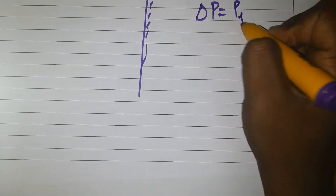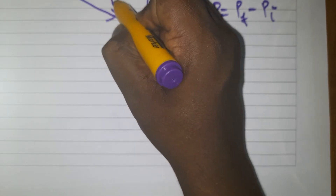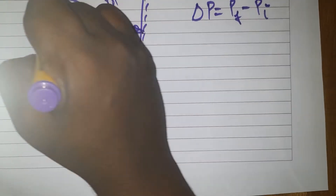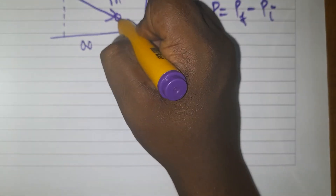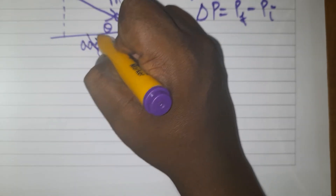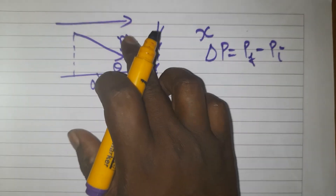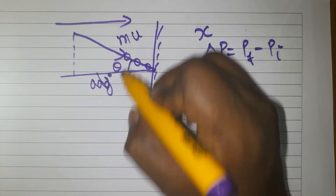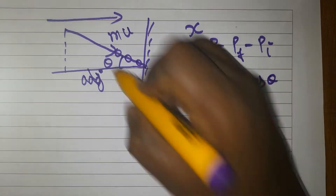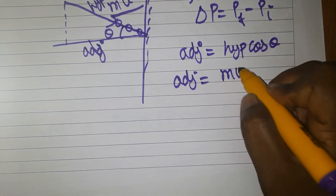First, we take the initial momentum. Change in momentum = momentum final minus momentum initial. The ball is coming in at 30 degrees, and I am taking only the x-axis component. The adjacent side of the triangle represents the x-direction. The hypotenuse is M×U, so the adjacent (x-component) is M×U×cos θ.